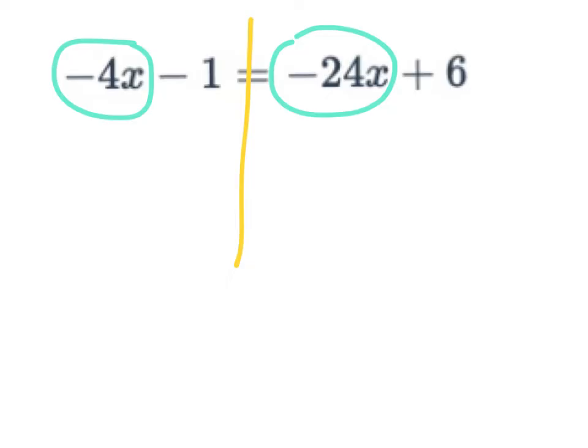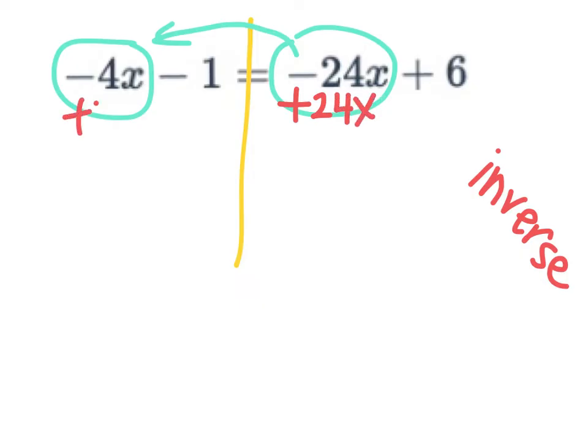In order to move something across the equal sign, I want to move this over to here. I have to use inverse operations, which means I have to use the opposite operation. So this negative 24, in order to get it to cancel out, I'm going to add 24 to both sides. A negative and a positive 24 will cancel out. And on the left side of the equation, I will have 20x.